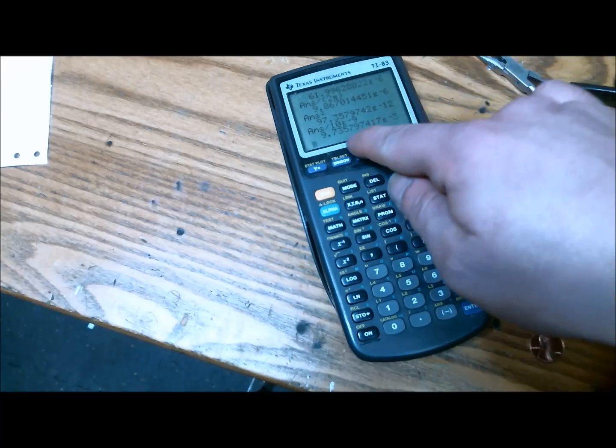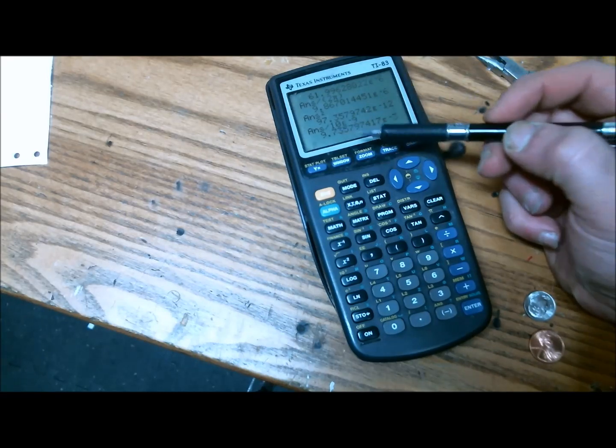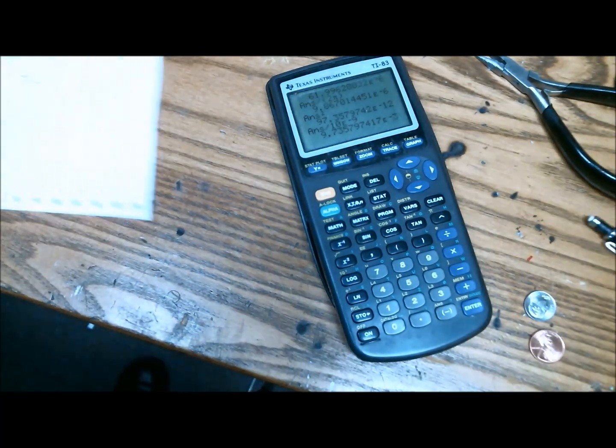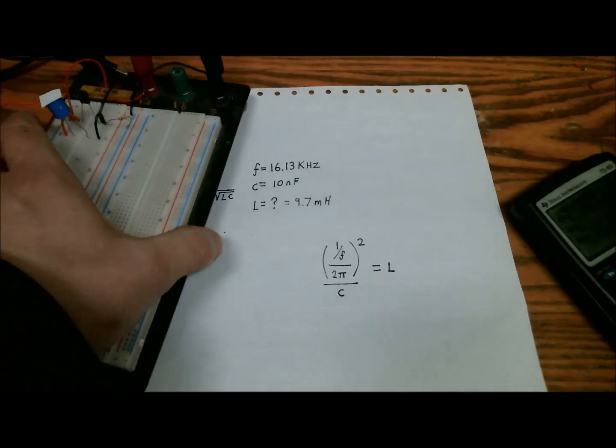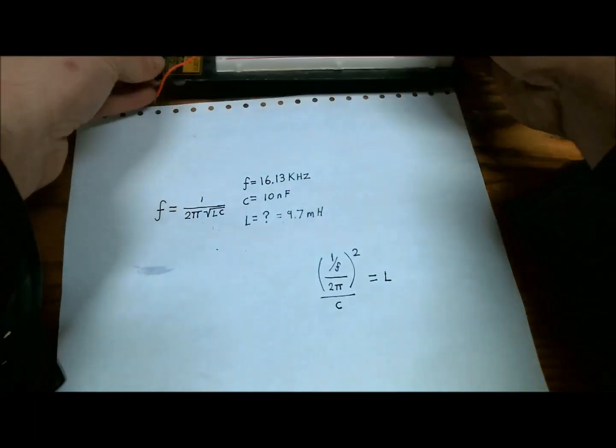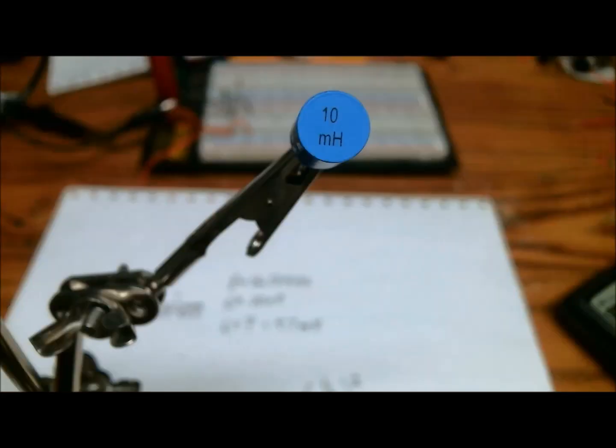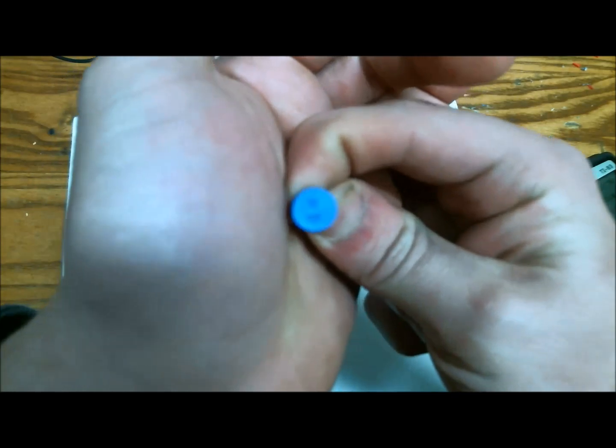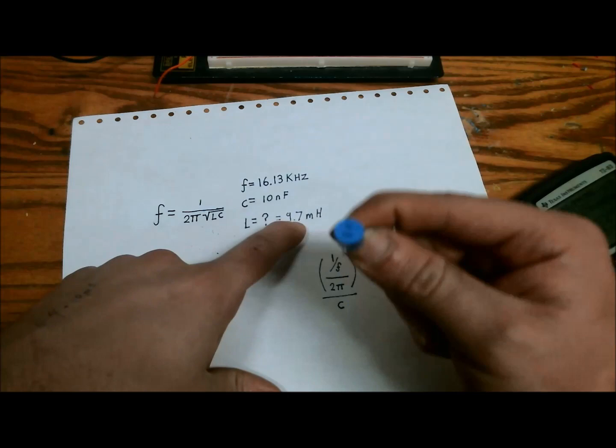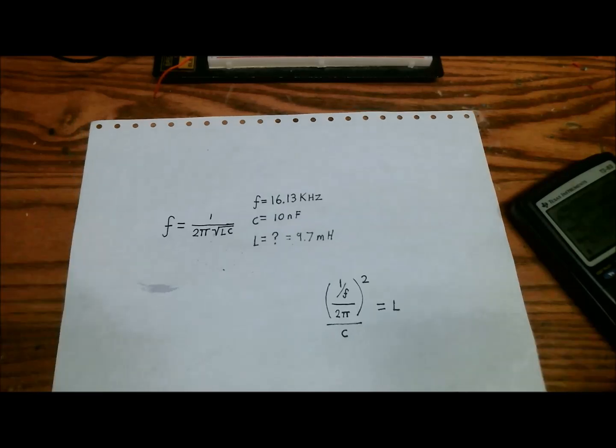So according to my calculations, the value of the inductor is going to be 9.7 millihenries. So let's pull this guy out of the circuit and uncover its value, and would you look at that? It's right at 10 millihenries according to their label. So I was off by 0.3 if this is exactly 10 millihenries. So the technique works and I hope this was really helpful to you guys.